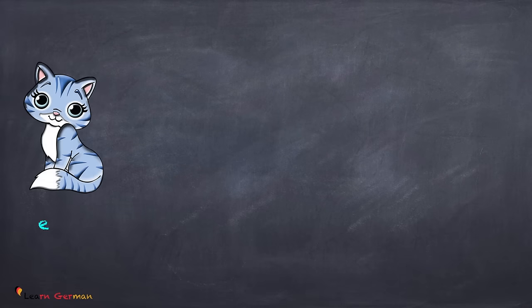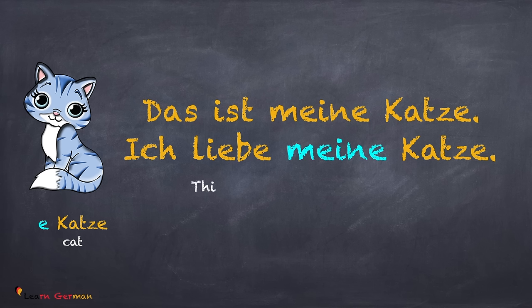And what happens when the accusative possessive pronoun is feminine? Das ist meine Katze. Ich liebe meine Katze. For a feminine accusative object, meine remains meine.